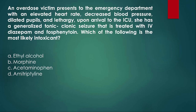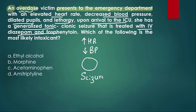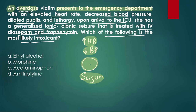Moving on to the next question — a case-based question. An overdose victim presents to the emergency department. The drug taken causes: increased heart rate, decreased blood pressure, dilated pupils (mydriasis), and lethargy. Upon arrival to the ICU, the patient had generalized tonic-clonic seizures, for which diazepam and fosphenytoin were given. Which of the following is the likely intoxication? Options are: ethyl alcohol, morphine, acetaminophen, and amitriptyline.